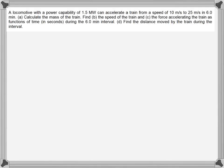A locomotive with a power capability of 1.5 megawatt can accelerate a train from a speed of 10 meters per second to 25 meters per second in six minutes. We have to calculate the mass of the train. The locomotive's power is 1.5 megawatt, meaning in one second it can do 1.5 megajoules of work.